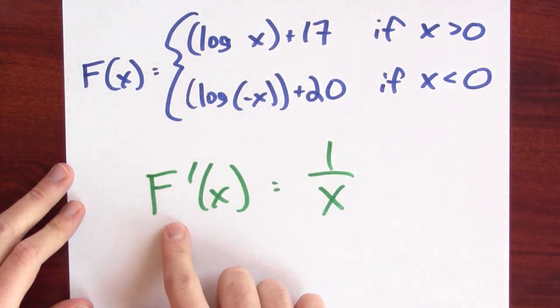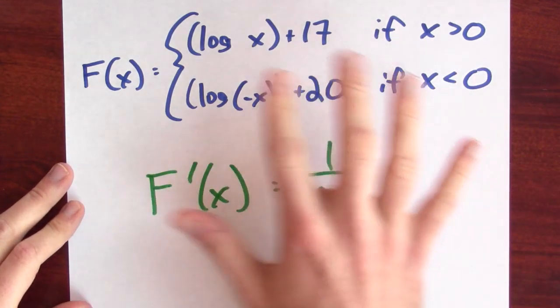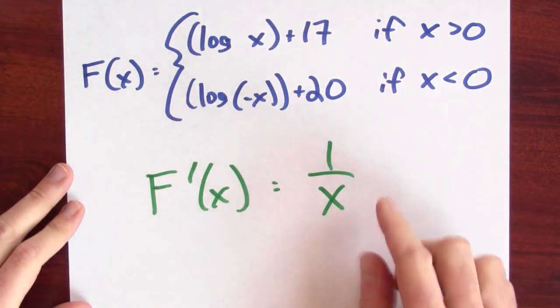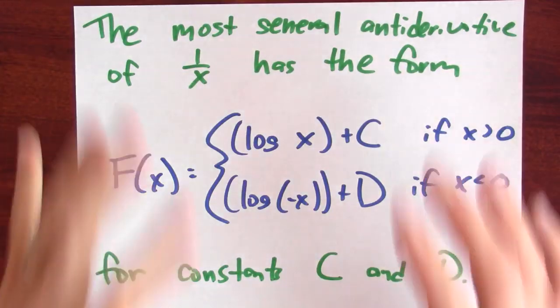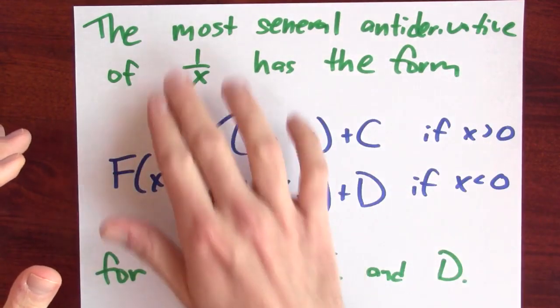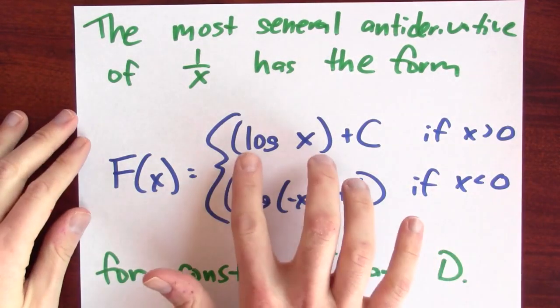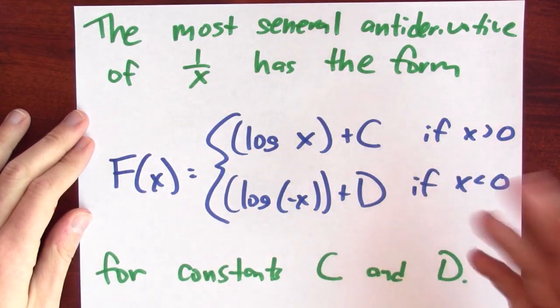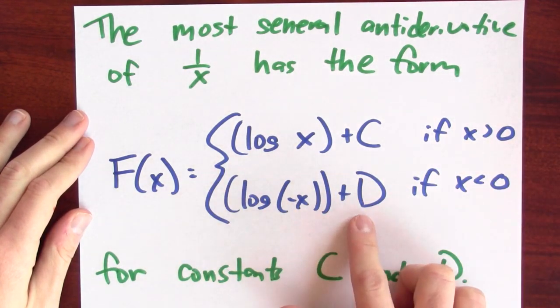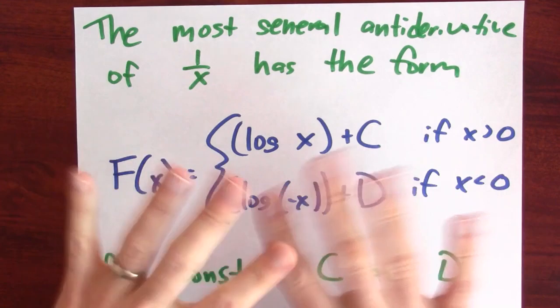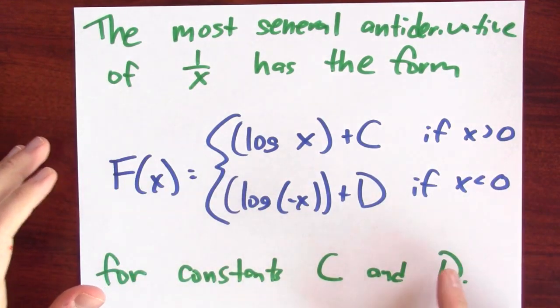In fact, the derivative of this function is 1/x. So this is an antiderivative for 1/x. The upshot here is that the constant could be different to the left and right of 0. So the most general antiderivative of 1/x is: F(x) = log(x) + c if x > 0, and log(-x) + d if x < 0, for some constants c and d. We can see this in a graph.